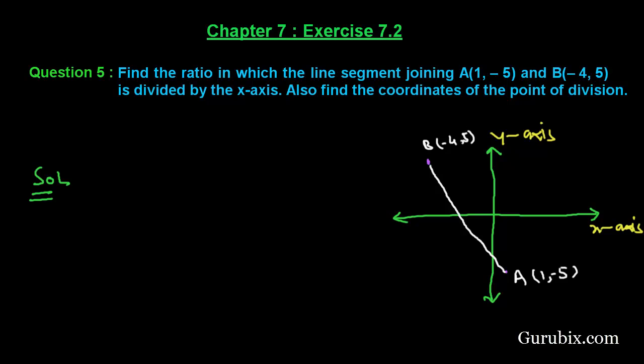And this line segment AB is divided by the x-axis at this point. Suppose this is point P and the coordinates of this point are (x, 0) because at the x-axis, the y-coordinate equals 0.